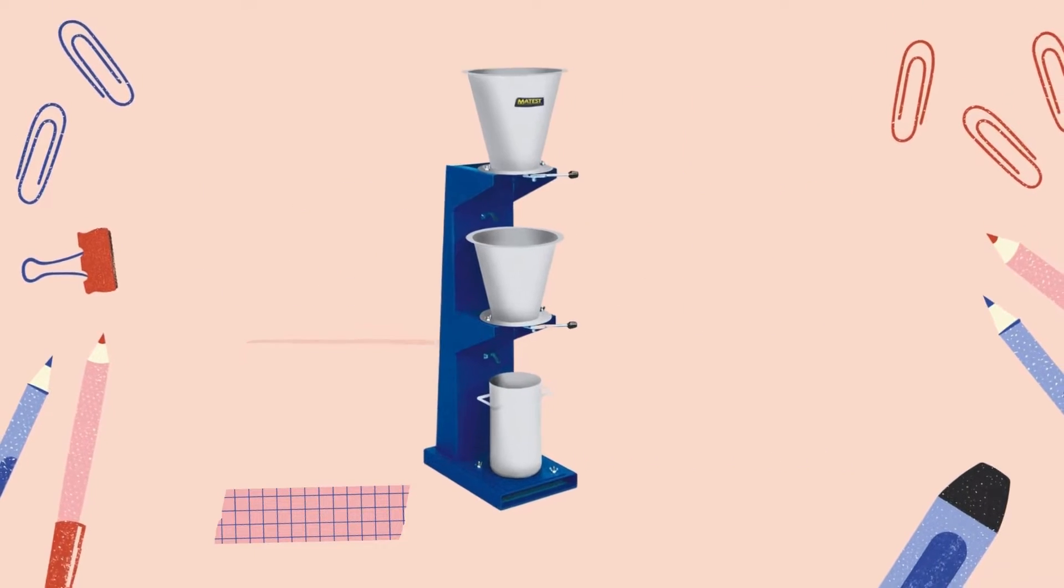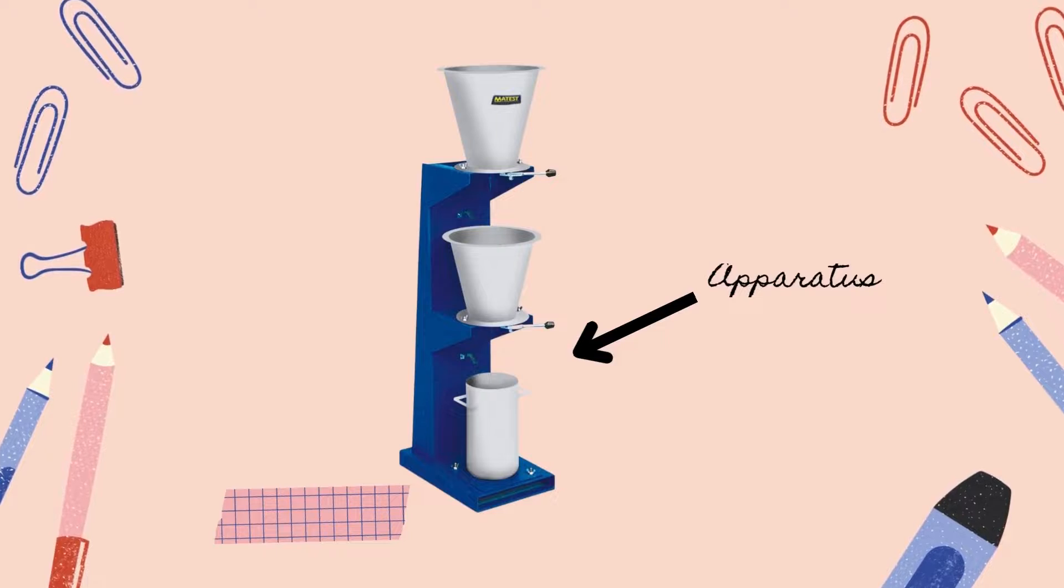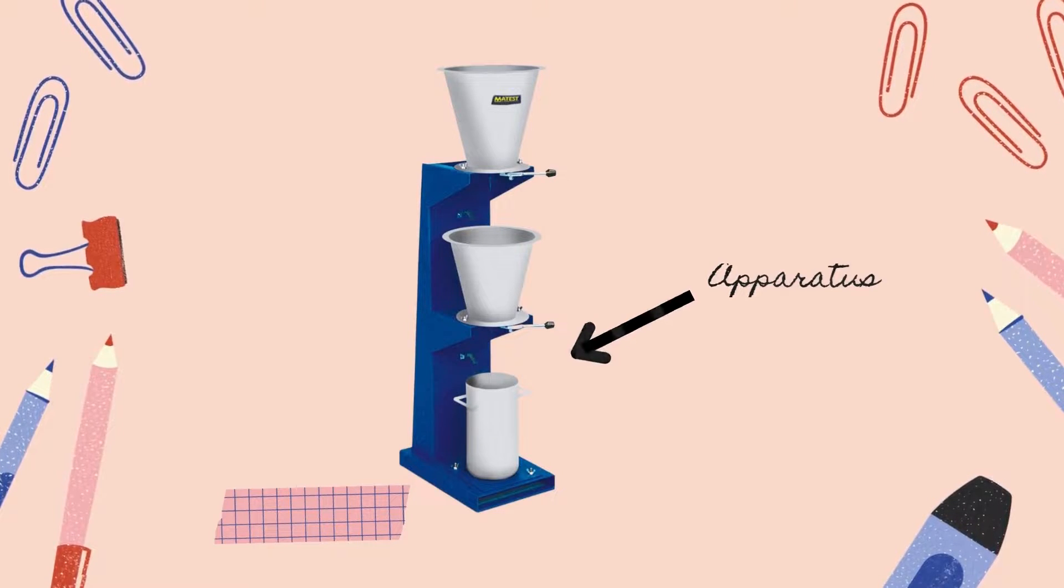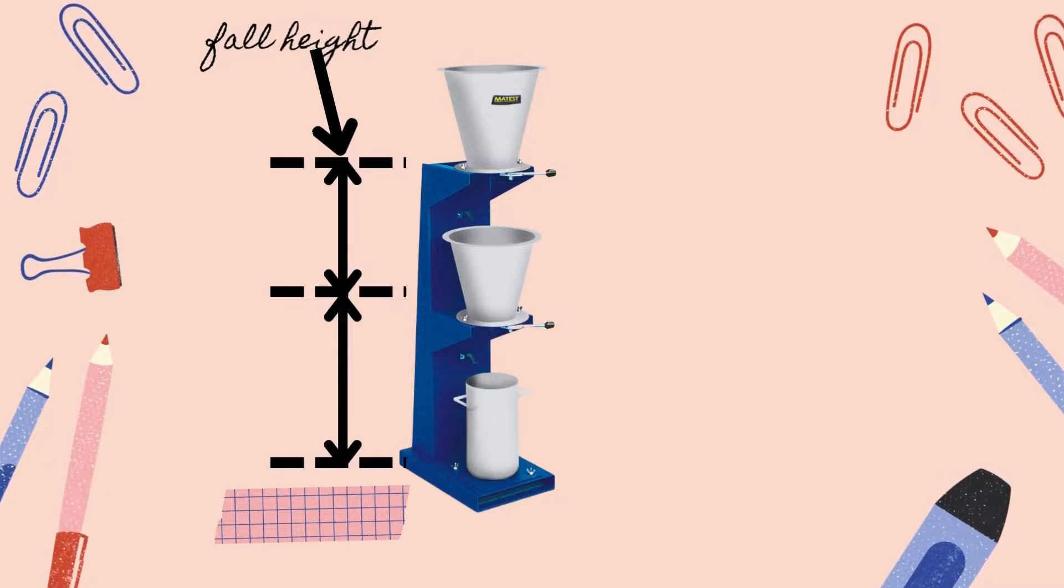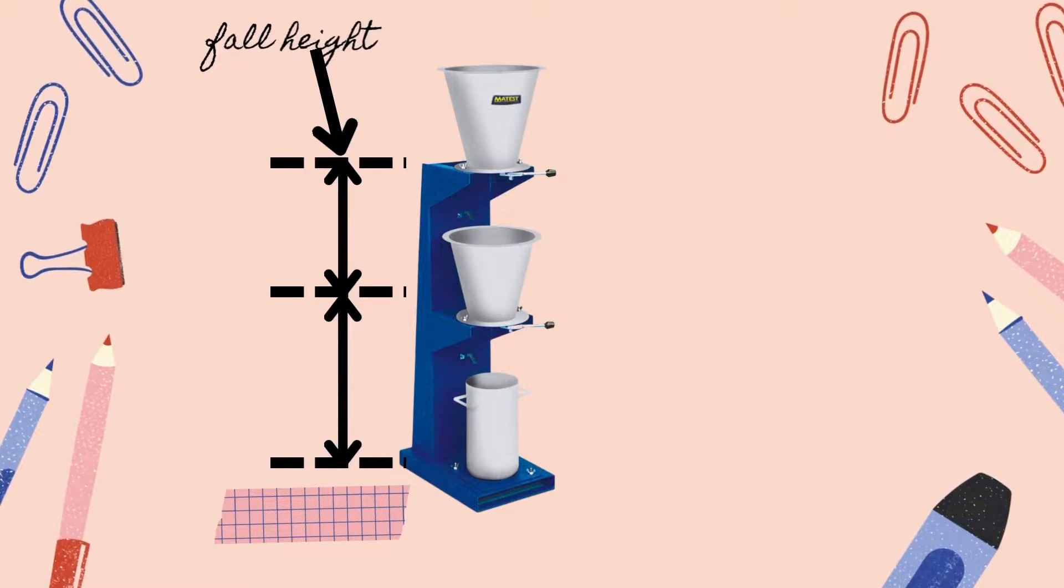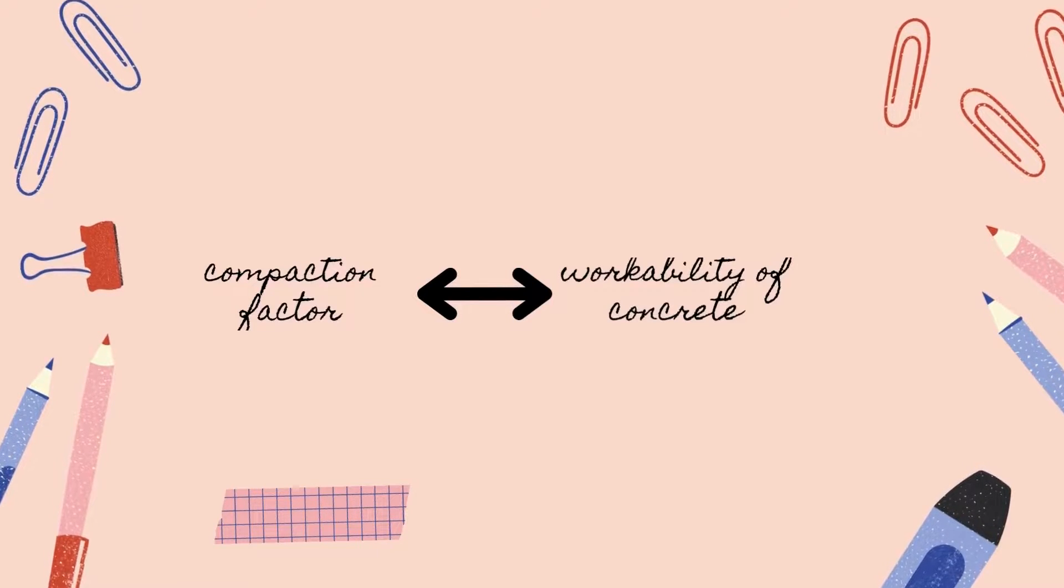Compaction factor test works on the principles of determining the degree of compaction. The special apparatus of compaction factor test allows the concrete to fall under standard heights. Afterwards, the degree of compaction and the compaction factor is measured by the density ratio.